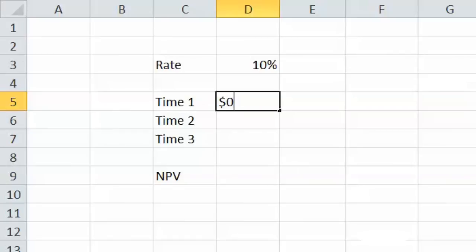In time one, we put zero. In time two, we put zero. In time three, we put $10,000, because we're trying to find out the net present value of $10,000 in three years.